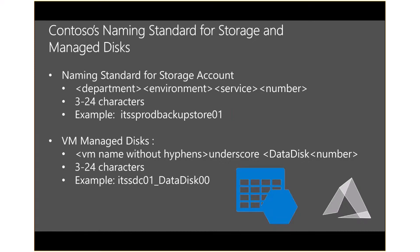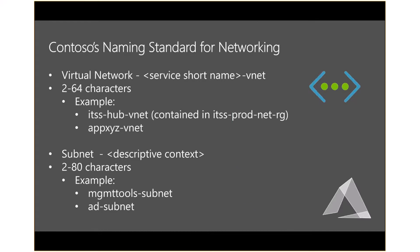For the naming standard for storage and managed disks: storage accounts use department, environment, service, and number — no dashes allowed, and it's only up to 24 characters. We used ITSS-PROD-Backup-Store-01. For VM managed disks, it makes sense to use the VM name; you'll see the VM name pop in as you add a data disk. The format is: VM name without hyphens, underscore, data disk, then 00, 01, 02, depending on how many disks you need. If you create VMs in the portal, disk names are auto-generated, but if you use scripts, you get the ability to name them the way you want.